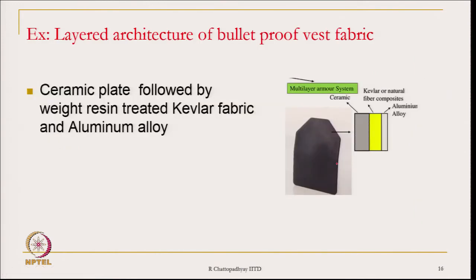An example is a bulletproof vest, which is also a layered architecture. There is a layer where ceramic is present as the first layer, then a Kevlar fabric composite, then an aluminum alloy. These three in combination — ceramic, textile/polymeric material, and aluminum alloy — protect the person from a bullet. Such architecture is used for developing bulletproof vests, and there are many more products where layered architectures can be used.